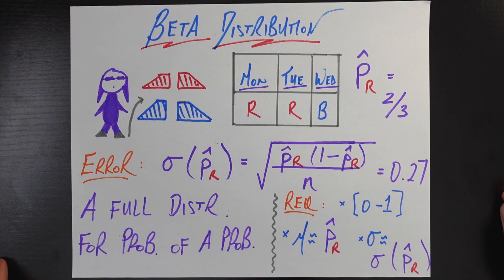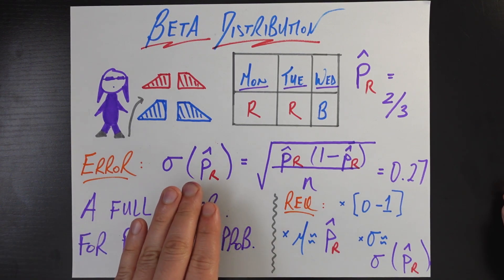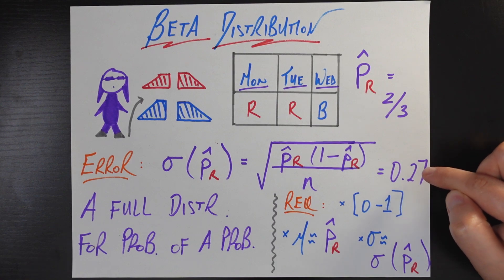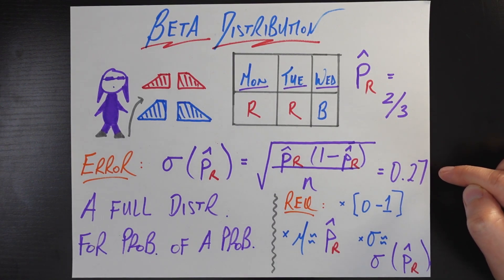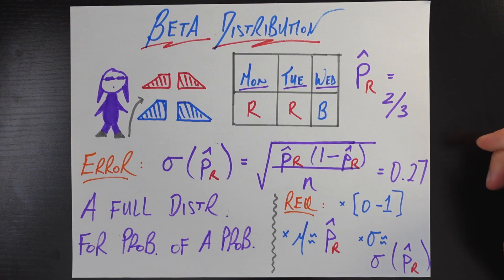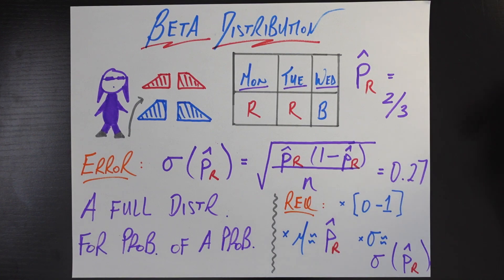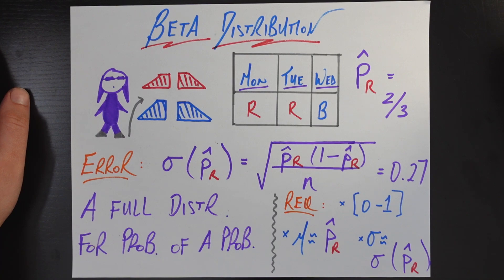For now, just observing three days, you see the error associated with this estimate of 67% is about 27% — a pretty big error. Which is great in your estimation of probability, because now you can tell someone: my best guess is 67%, but that comes with an error of plus or minus 27%. So whoever you tell this to has a much better understanding about what the situation is.